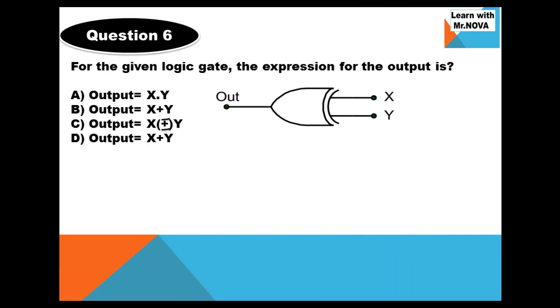Question 6. For the given logic gate below, the expression for the output is? 5 seconds to answer this question. The answer is C. That is an expression for the XOR gate, the exclusive OR gate.